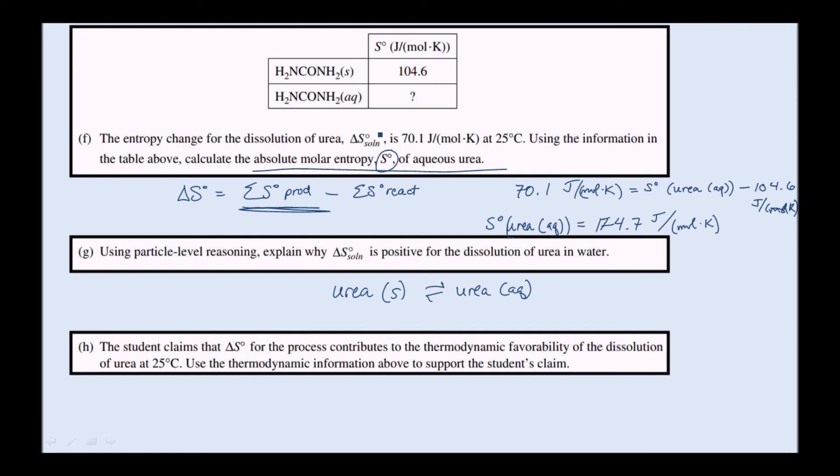In part F, they tell us that delta S solution is a positive number. So on a particle level, it makes sense that delta S solution is positive because we're going from solid to aqueous, the dissolution of urea. Urea in the solid state to urea in the aqueous state. We know that urea particles in the aqueous environment have a lot more possible arrangements, configurations, freedom of motion than in solid urea. That goes for gases have higher entropy than liquids, which have higher entropy than solids. We know that at a particle level. So increased number of arrangements in the aqueous state correspond to a positive delta S of solution for this dissolution.